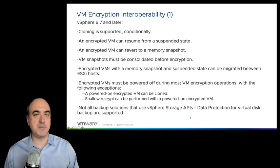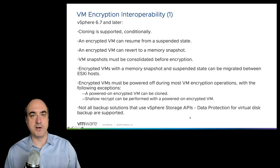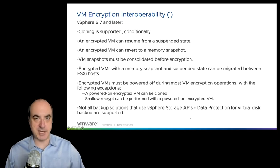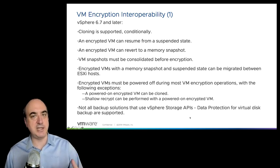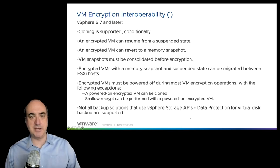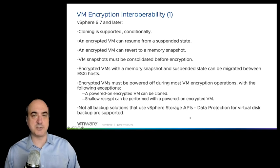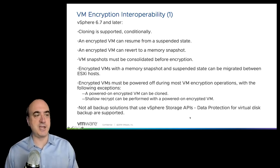What is a shallow re-crypt? Remember, there are two keys that are part of VM encryption. There is a key used to encrypt the data key, and then the data key is used to encrypt the data. A shallow re-key is basically that outer layer — the KMS-generated key encrypting key. You can give the VM a whole new key, but the data is still encrypted with the same data key — that didn't change. There's also something called a deep re-key, which would actually rotate all layers of the keys.